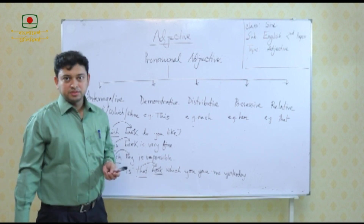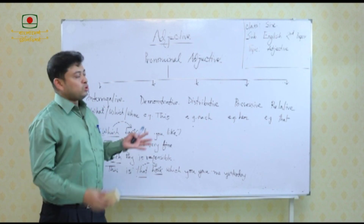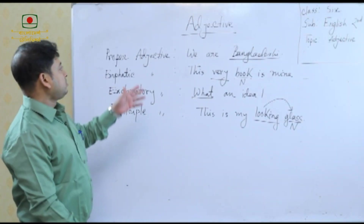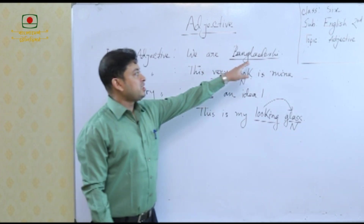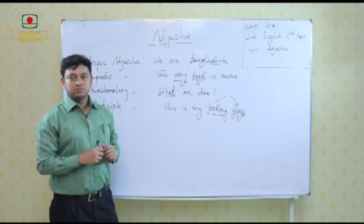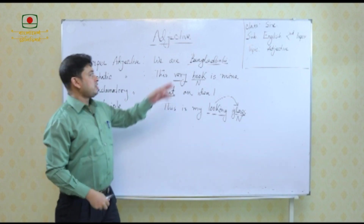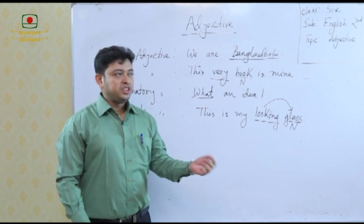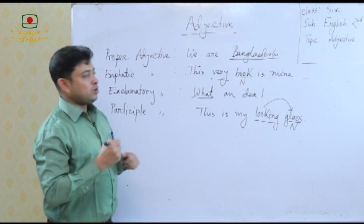There are some more important adjectives. The first is proper adjective. For example: We are Bangladeshi. The word 'Bangladeshi' comes from 'Bangladesh', which is a proper noun — the name of a country. When any proper noun becomes an adjective, the name is proper adjective. Examples: Bangladesh → Bangladeshi, India → Indian, China → Chinese, Britain → British. Remember, proper adjectives always start with a capital letter.